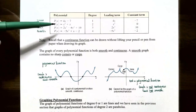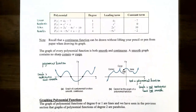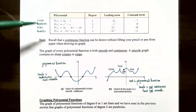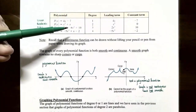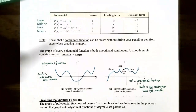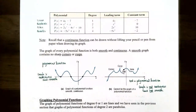For p(x) equals x squared plus x, the highest power is 2, the degree is 2, the leading term is x squared, and the constant term is 0 since there is no x to the 0 power term. This is a quadratic function — a polynomial function of degree 2. For p(x) equals 2x cubed minus 6x squared plus 10, the degree is 3, the leading term is 2x cubed, the constant term is 10, and this is called a cubic function.